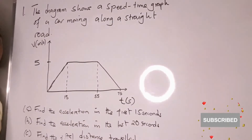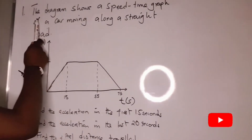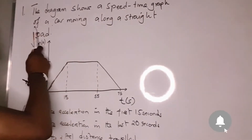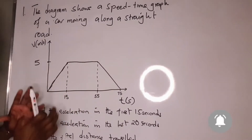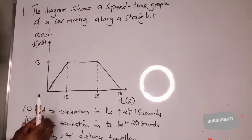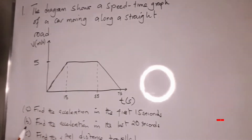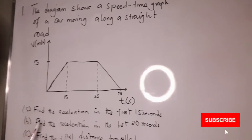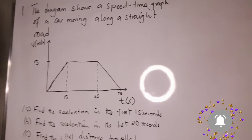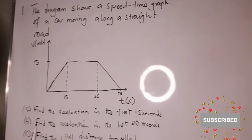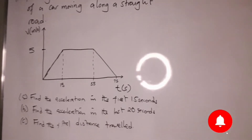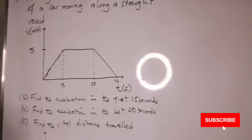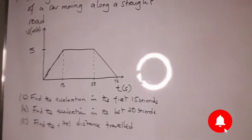So we have this question here, which says: the diagram shows a speed-time graph of a car moving along a straight road. The first question, part A, is to find the acceleration of the car in the first 15 seconds. Part B is to find the acceleration of the car in the last 20 seconds. And part C is to find the total distance traveled by the car.